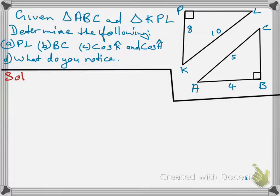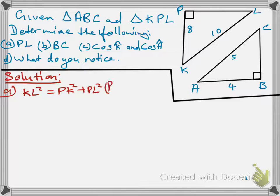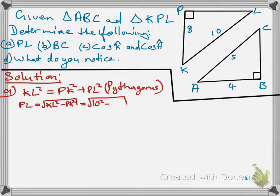So, remember, you can always have your Sokatoa written down. So, in this case, to find PL, we use Pythagoras, which means the hypotenuse side would be equal to the sum of the squares of the other two sides. So, making PL subject of the formula, we can see PL is equal to square root of KL squared minus PK squared, which will be equal to square root of 10 squared minus 8 squared, which gives us PL is equal to 6. So, you can see we used here Pythagoras to work out the side PL.